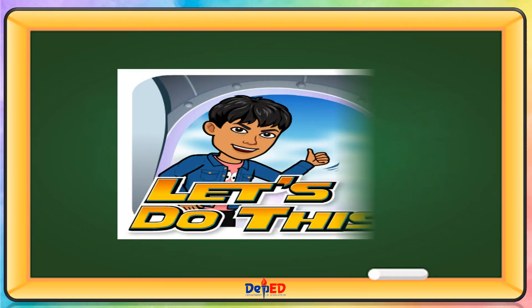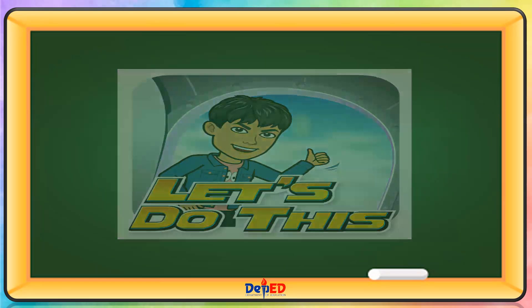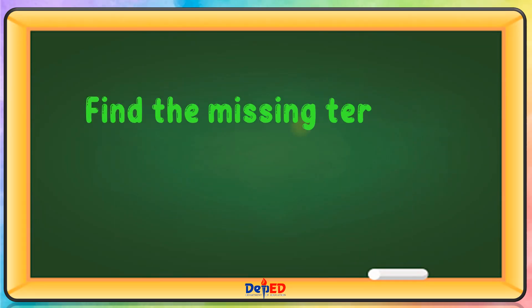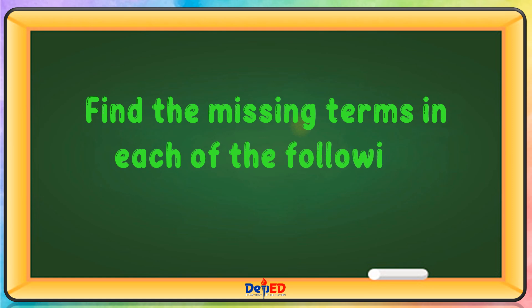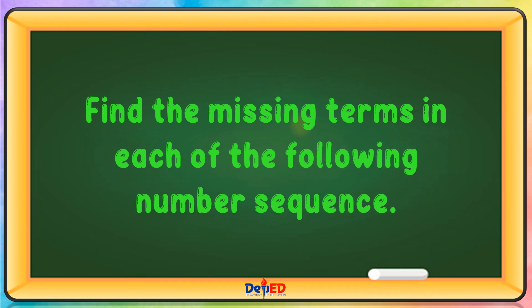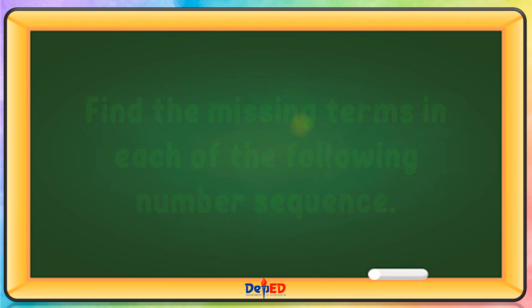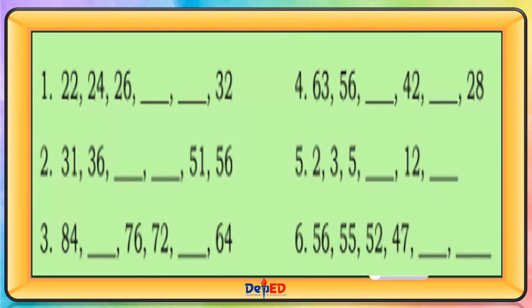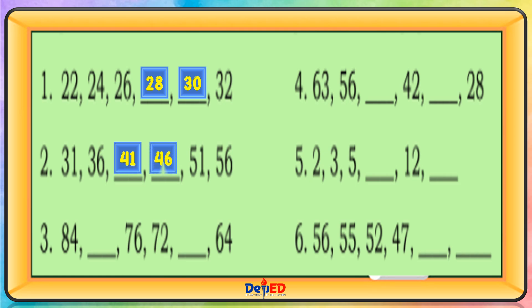Let's do this. Find the missing terms in each of the following number sequences. 22, 24, 26, 28, 30, 32. 31, 36, 41, 46, 51, 56.